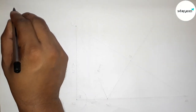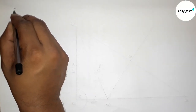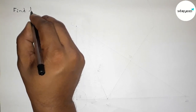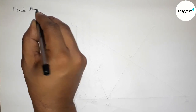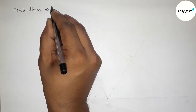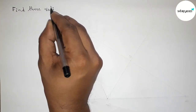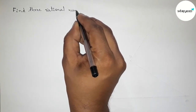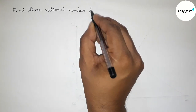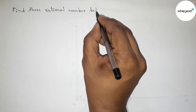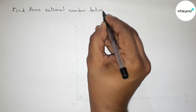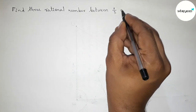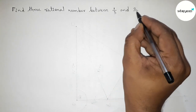Hi everyone, welcome to Essay Share Classes. Today in this video we have to find three rational numbers between 1 by 3 and 2 by 7 in an easy way. Please watch the video till the end. So let's start.